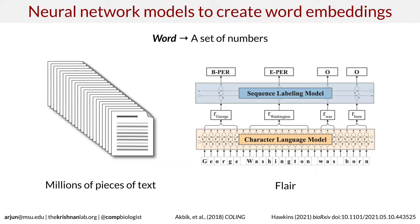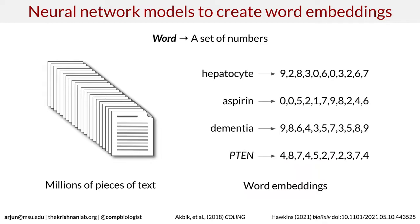Our main inspiration comes from a class of methods in natural language processing called word embeddings. The idea is that you can build sophisticated neural network models that train on large text corpora containing millions of pieces of text, and learn to represent every single word using a set of numbers. For example, we use a model called FLAIR applied to biomedical text, which produces data where every single word is turned into a set of numbers that capture its semantic meaning. So words like hepatocyte, aspirin, dementia, or p10 become numbers — and that is great because numbers can be used as input to many existing statistical and machine learning methods.